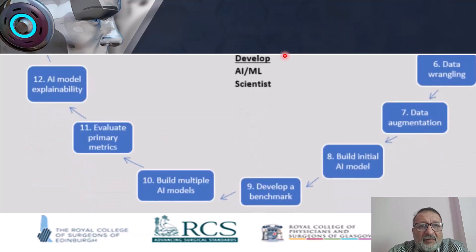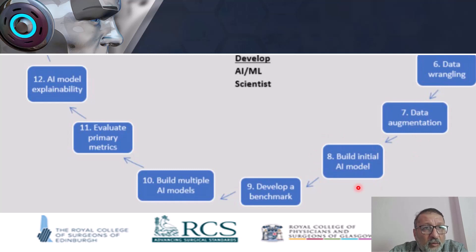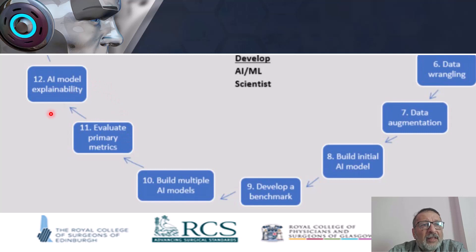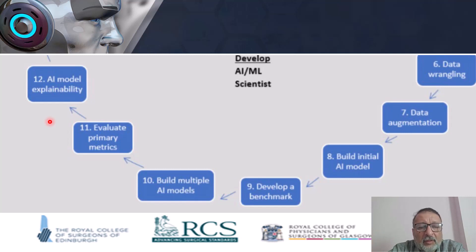The second is the development phase. It involves data wrangling — how you manipulate data — and data augmentation. Then you build your initial AI model, which can be just three or four lines of Python coding. I will show you how some websites can even provide you with the code, so it is not that difficult and does not need previous computer knowledge. Then you develop your benchmark — for example, accuracy above 90% for detecting cancer. You build multiple models, evaluate each one, take the most accurate, and then do AI explainability, putting it into a program.